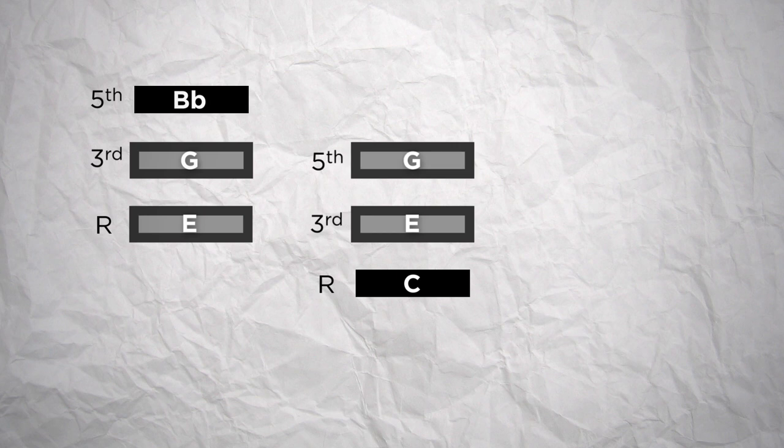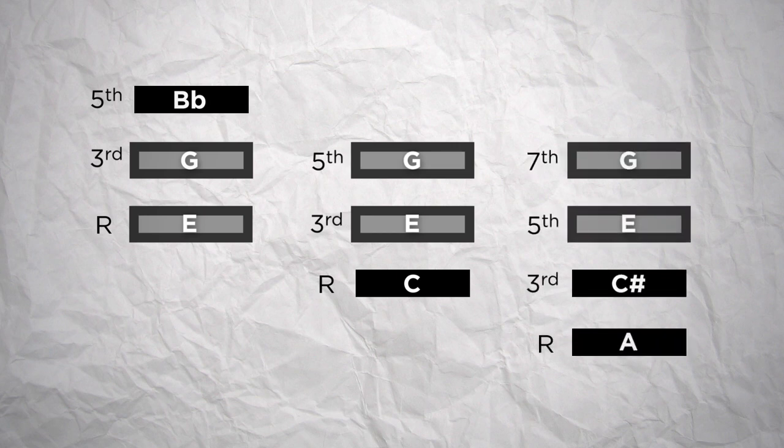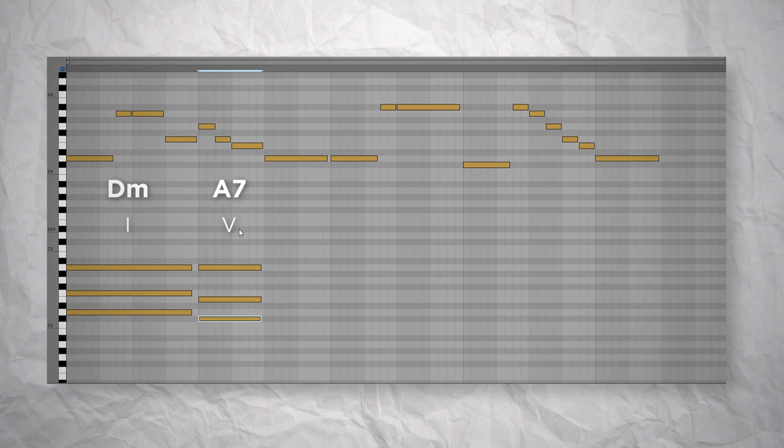The G and the E here can be the root and the 3rd of an E chord or they can be the 3rd and the 5th of a C chord. But here I decided to consider them as the 5th and the 7th of an A dominant 7th chord by adding the root note A and the major 3rd C sharp. It's a chord that can be used on a 5th degree and that resolves well on a degree 1. And sure enough we have a D at the end of this bar so we can land on a D minor chord here.